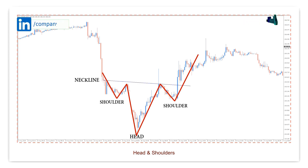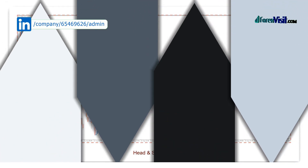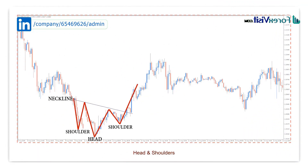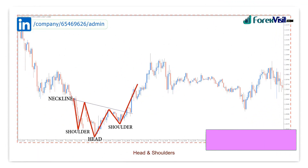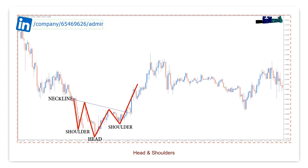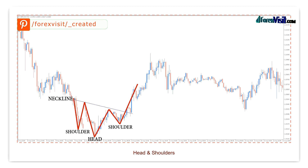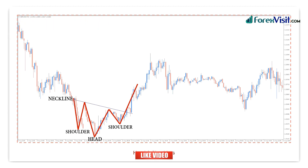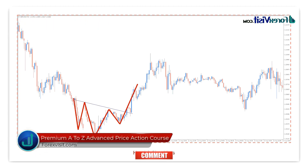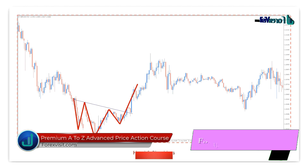The inverse head and shoulders resembles the same structure as the standard formation but reversed. The inverse head and shoulders is observable in a downtrend and indicates a reversal of that downtrend as higher lows are created. As always, if you learned something new or want more videos more often, make sure you subscribe, click the notification bell, and leave us a like to show your support. See you next time.